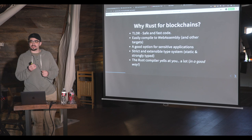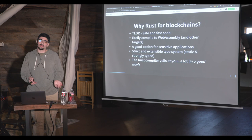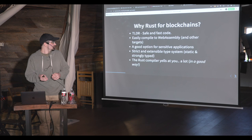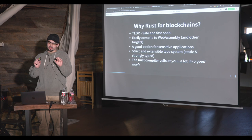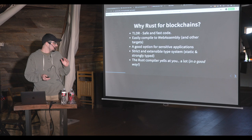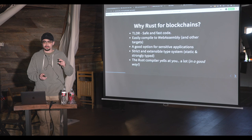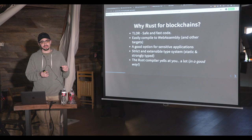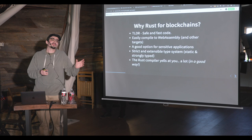Why Rust for blockchains? To summarize in one sentence: it's safe and fast code. You can write memory-safe code very quickly without having to be a low-level engineer. If you've ever written C or C++, you know you have to worry about memory management — but with Rust, it takes care of all that for you while still giving you the performance of a low-level language. It's a good option for sensitive applications. The type system is strict but also really extensible, good for writing strict APIs — the compiler will tell you if you do something wrong with types.